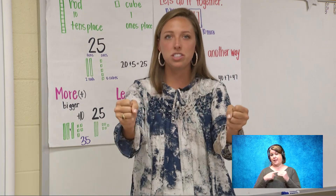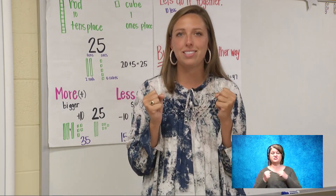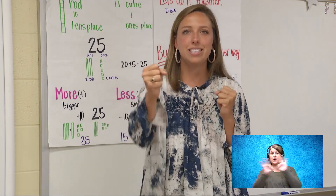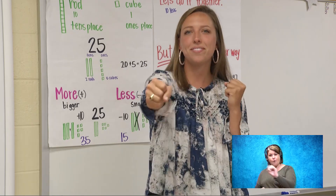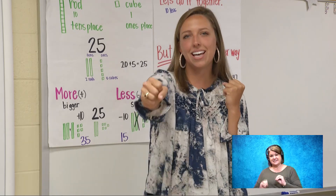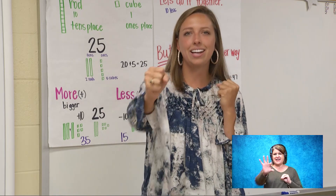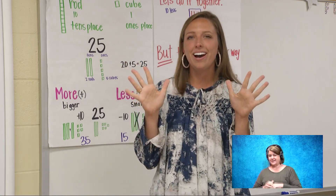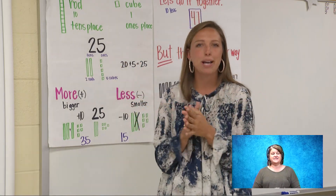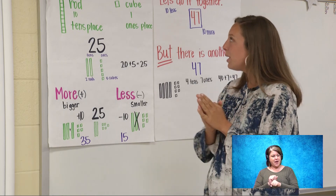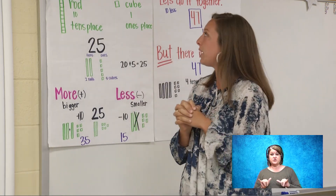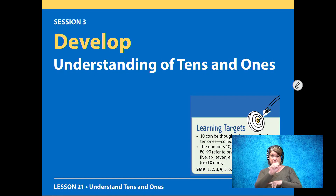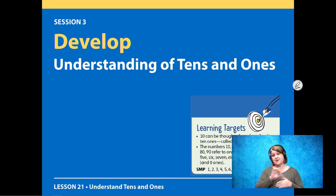So every punch is worth 10 starting at 0: 10, 20, 30, 40, 50, 60, 70, 80, 90, 100. All right great job and I hope your math brain is warmed up. We're going to still do our standards for today. We are doing tens place value and counting by tens, 10 more and 10 less.